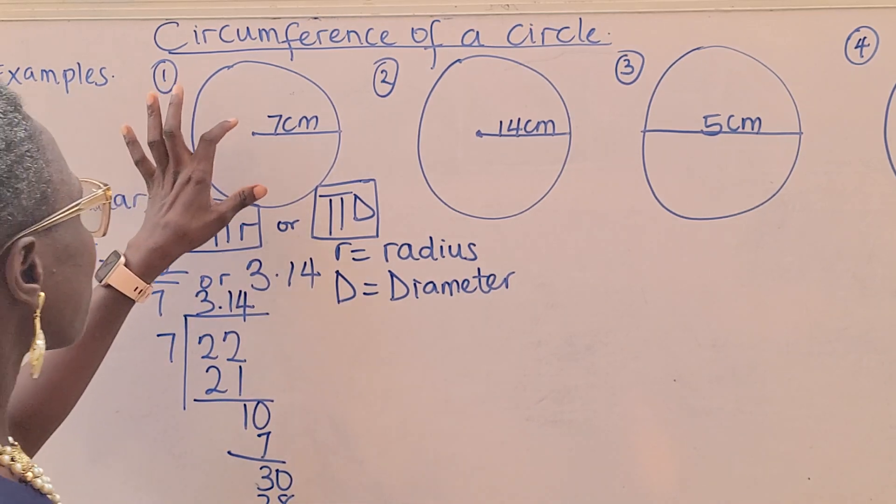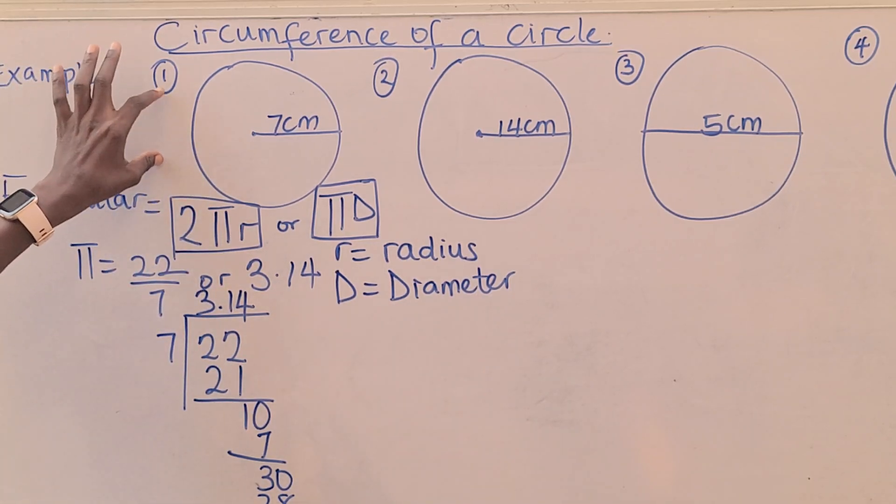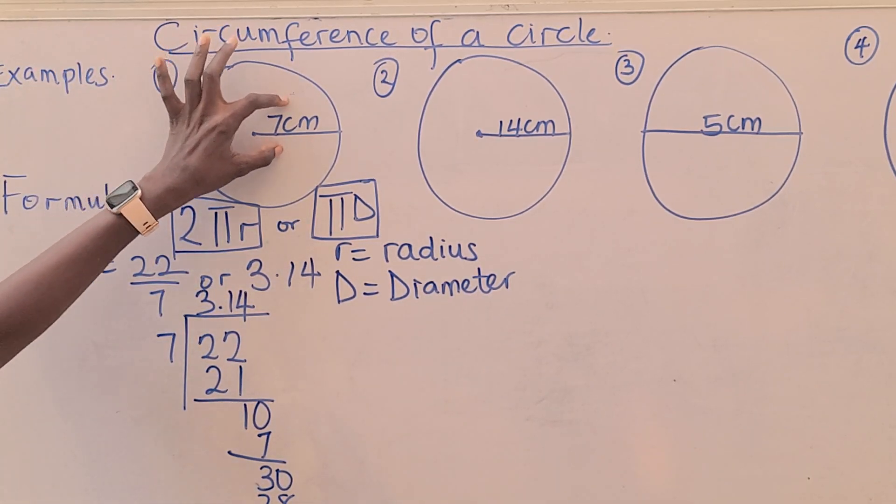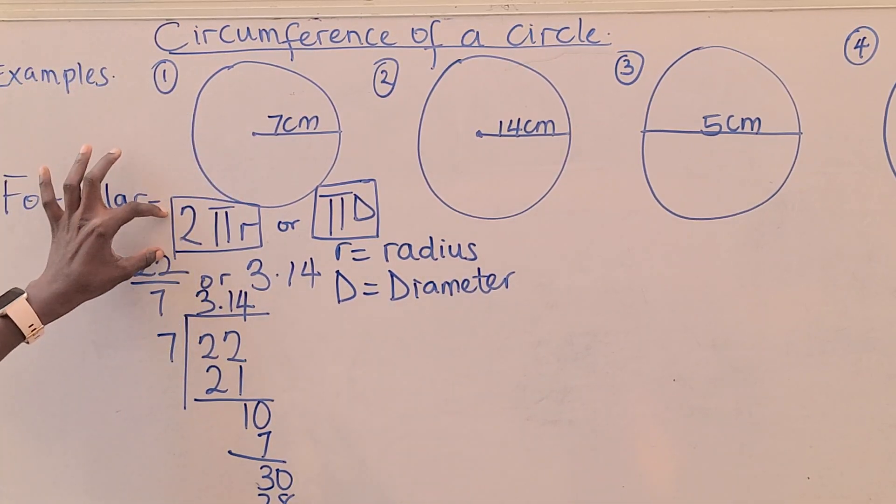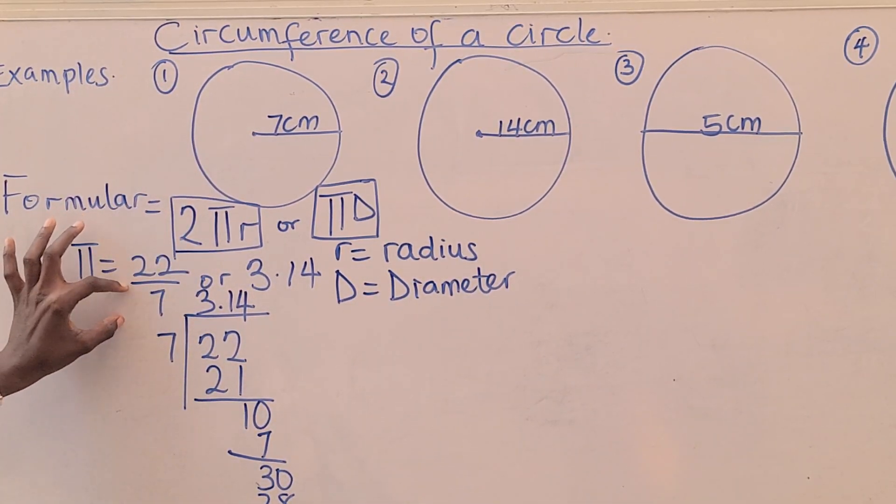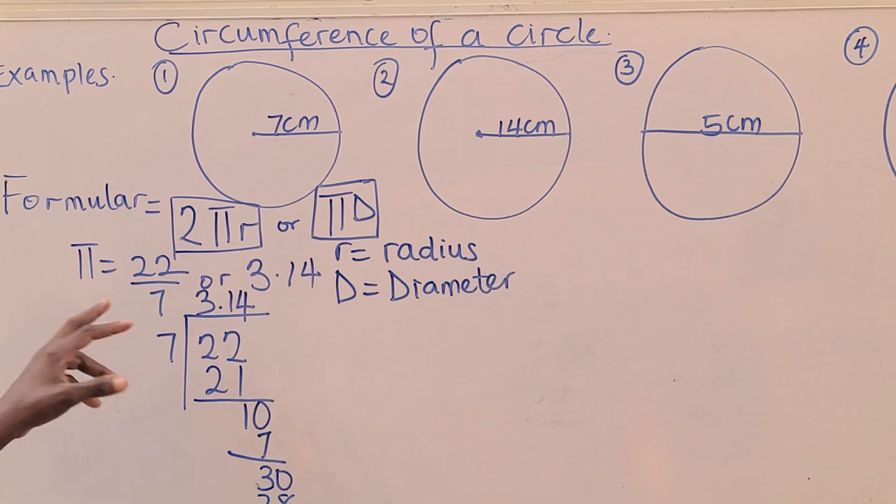If you are given radius, you are using the formula 2πr. But if you are given diameter, you will be using your formula to be πd. Whichever one you are given, just go ahead and use that formula. Let's start with the first example. I have a circle here with a radius of 7 centimeters. I'll use this formula, and I have my π to be 22 over 7.